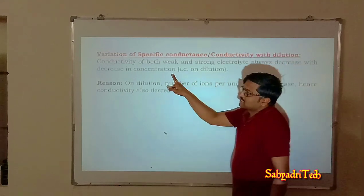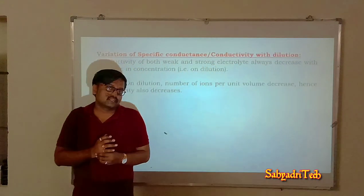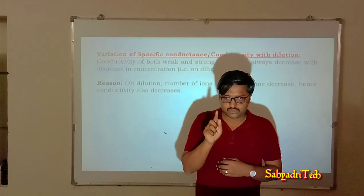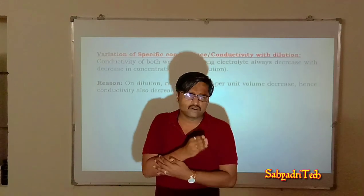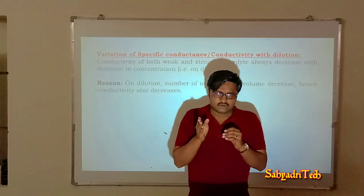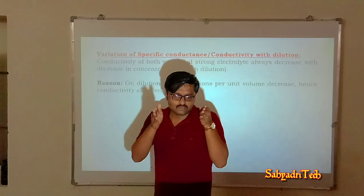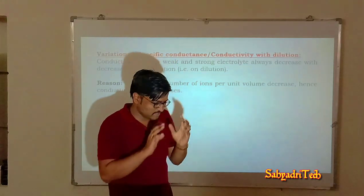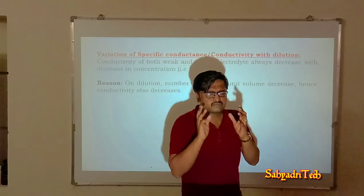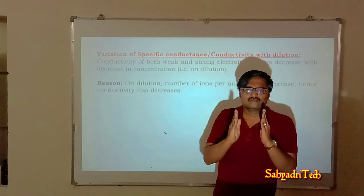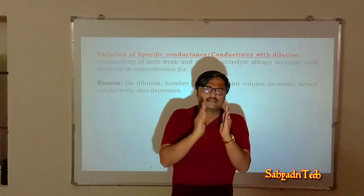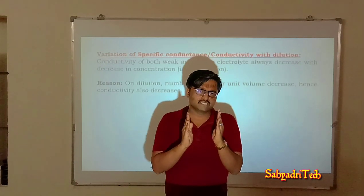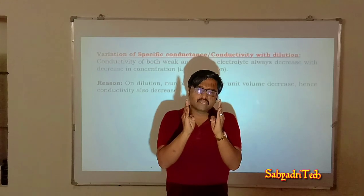Specific conductance is the conducting power of all the ions produced, or you can say present between two electrodes of unit length and unit area of cross section. When you think of the analogy, there will be two electrodes between which we have placed a solution — both electrodes are of unit length and unit area of cross section.